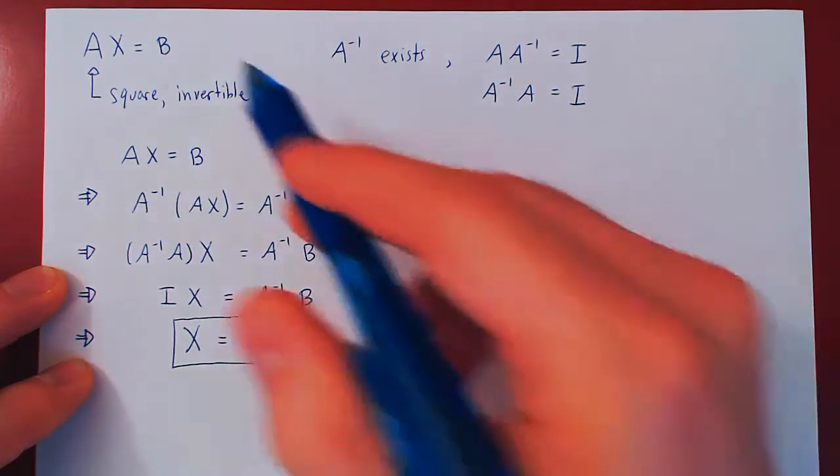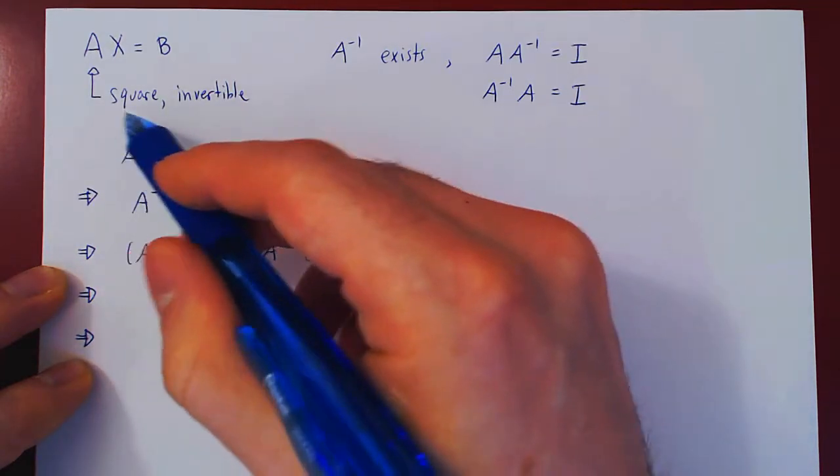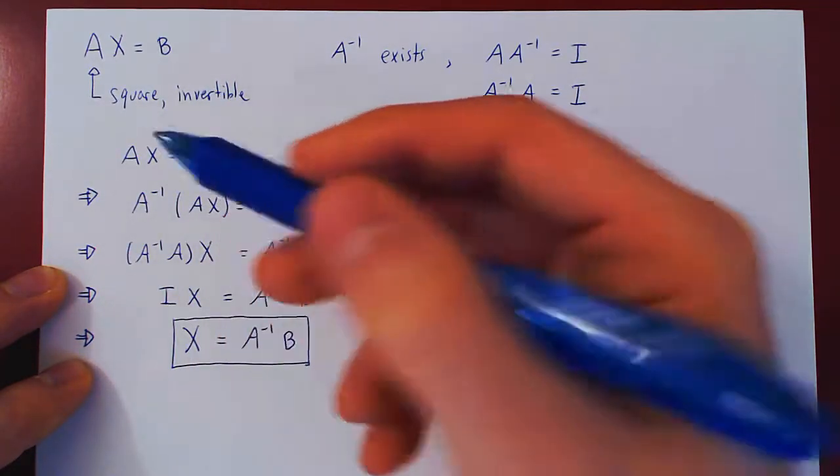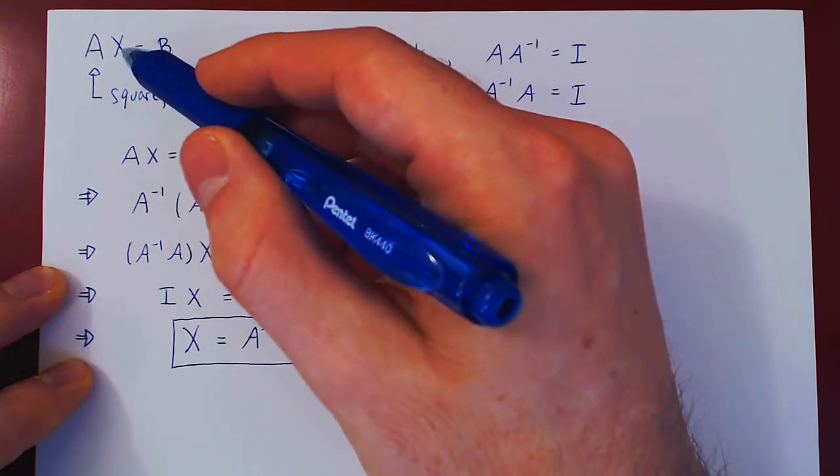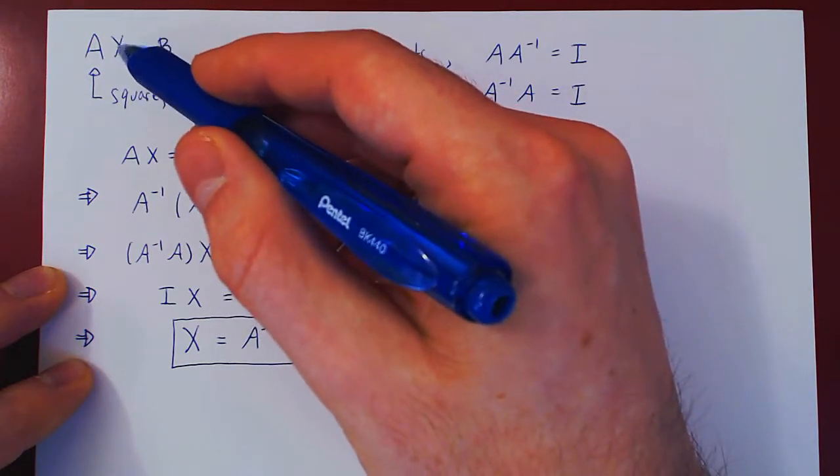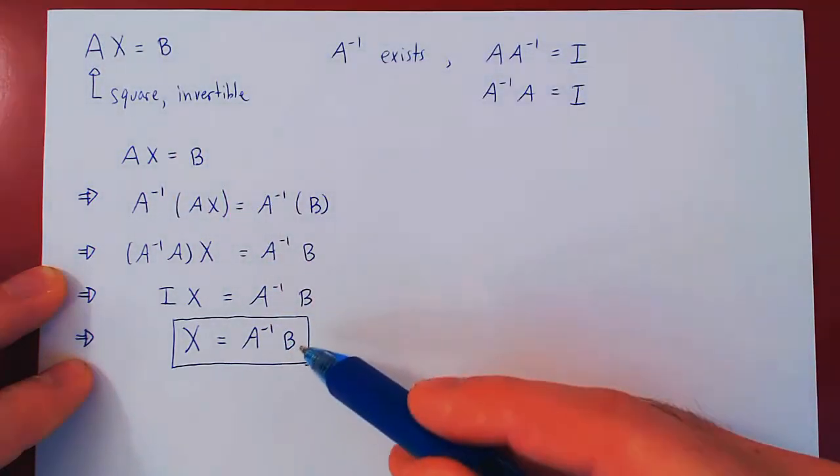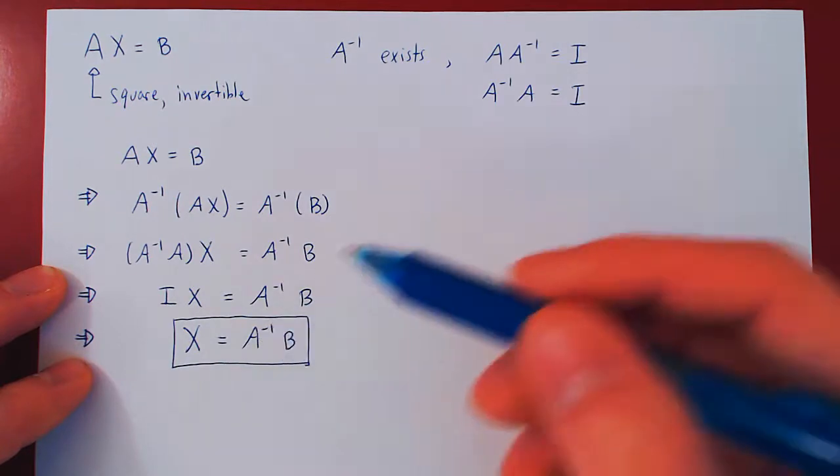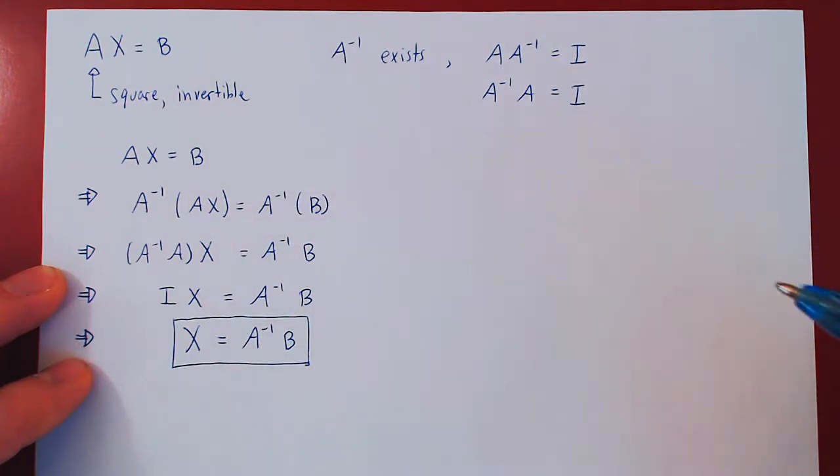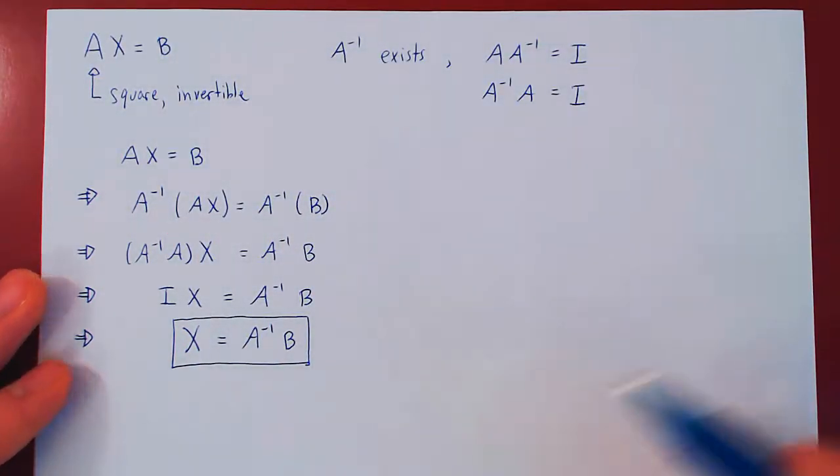So whenever you have a linear system where the matrix of coefficients is square and invertible, there is a unique solution to the vector variables X, and the unique solution is A inverse times B. That's it. Let's do an example, and we'll just keep the calculation simple, so we'll use an example where A is a 2 by 2 invertible matrix.